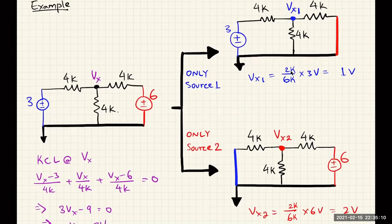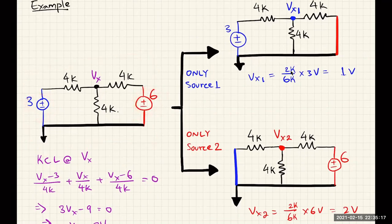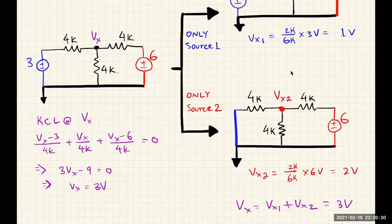This is best understood with an example. Here I have a circuit that has two voltage sources — a three-volt source and a six-volt source — connected with a resistive network. If I wanted to find the voltage Vx on the circuit, I can go ahead and solve it using nodal analysis or KCL and KVL, and I can find the voltage as three volts.